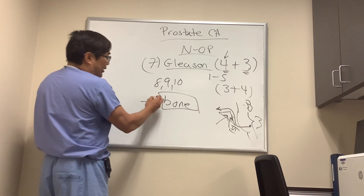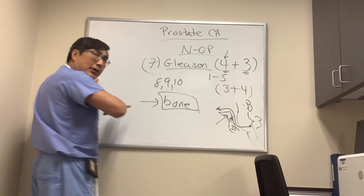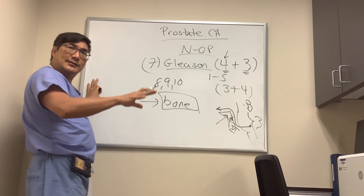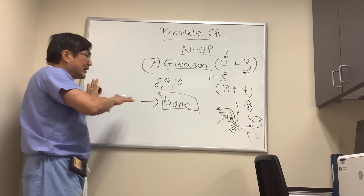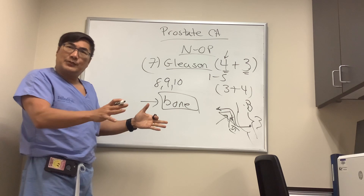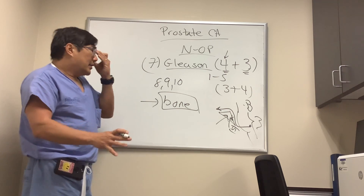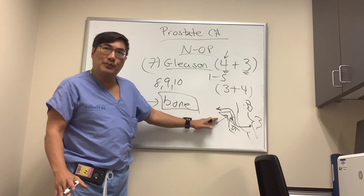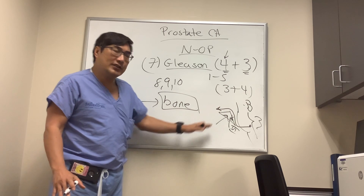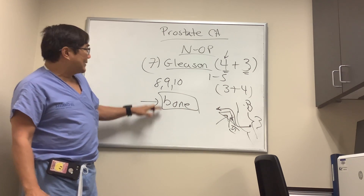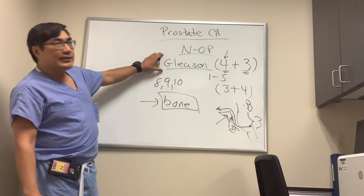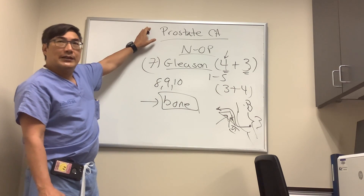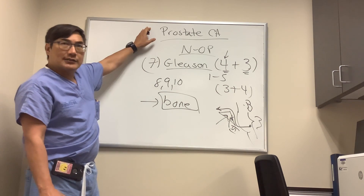Prostate cancer can also go to the calvarial bones and skull base, producing orbital presentations, and if near the optic canal, it can cause optic neuropathy. But most commonly it will be the clivus. To summarize: diplopia from a sixth nerve palsy, clivus involvement, and skull base bone metastasis — and you need to know the Gleason score in any neuro-op patient with a past medical history of prostate cancer.